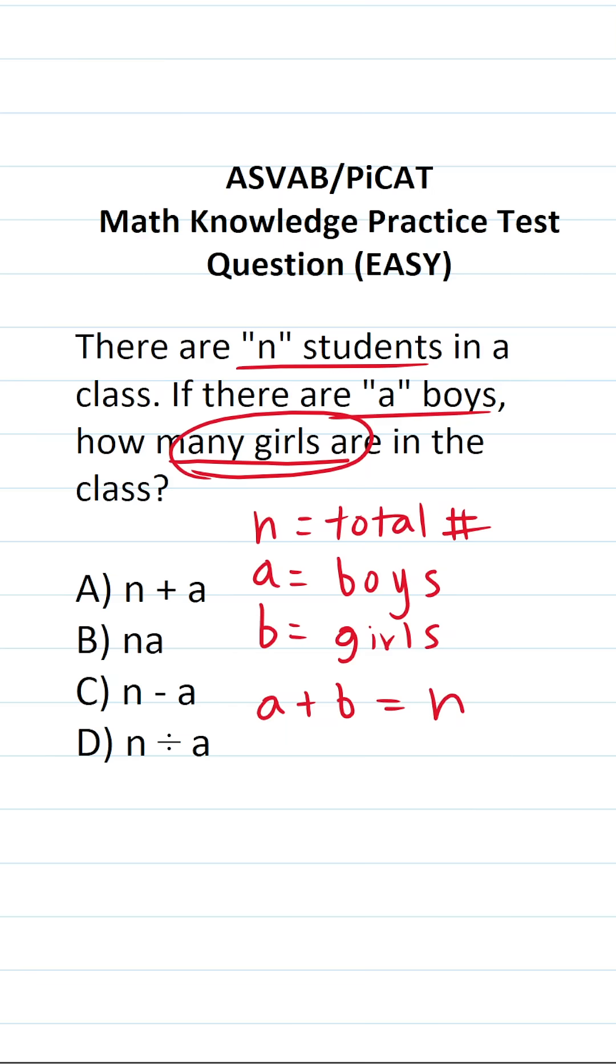We want to know how many girls are in the class, so we're going to solve this equation for b by subtracting a from both sides of the equation. This crosses out. This says b is equal to n minus a.